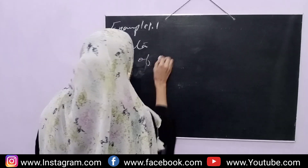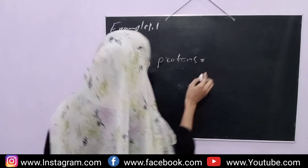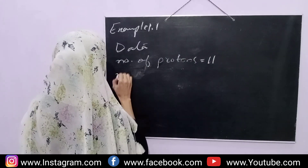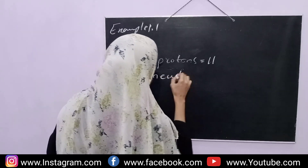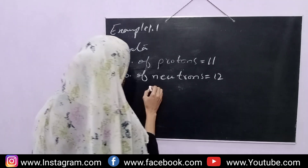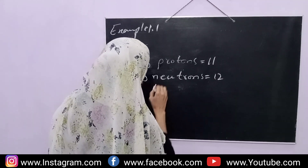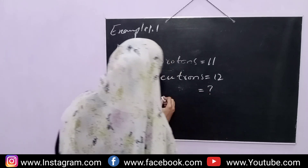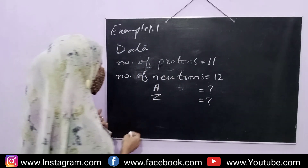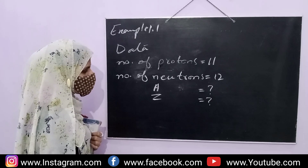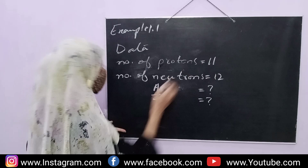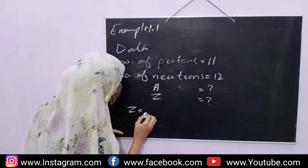Given: number of protons is 11 and number of neutrons is 12, find atomic number and mass number. As we know, atomic number is the number of protons, so the atomic number is 11.